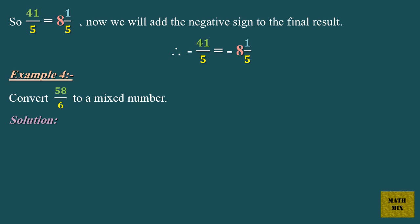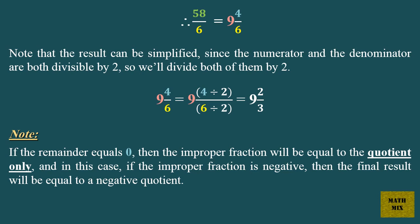Example 4: Convert 58 over 6 to a mixed number. Therefore, 58 over 6 equals 9 and 4 sixths. Note that the result can be simplified, since the numerator and the denominator are both divisible by 2, so we'll divide both of them by 2. 9 and 4 sixths equals 9 and 4 divided by 2, over 6 divided by 2, which equals 9 and 2 thirds.